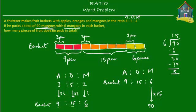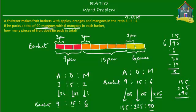So if he's going to pack 15 baskets, then how many apples and oranges is he going to need? He's going to need nine times 15 apples and 15 times 15 oranges, because he's going to pack 15 baskets of fruit. So he's going to need nine times 15, which is 135 apples. And he's going to need 15 times 15 oranges, which is 225 oranges. And we already know that he packs 90 mangoes. So in all, he's going to need 135 apples plus 225 oranges plus 90 mangoes. 135 plus 225 plus 90 equals 450. So he's going to need a total of 450 pieces of fruit. And that's the answer to our question.